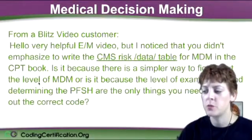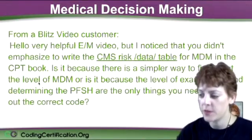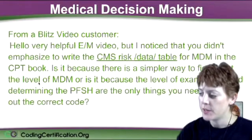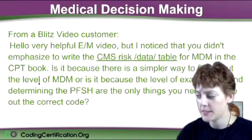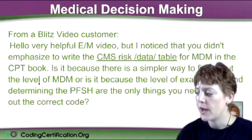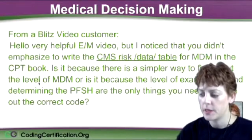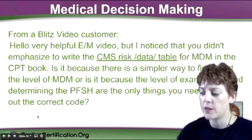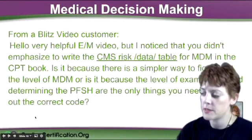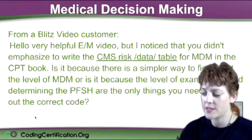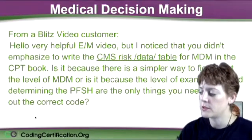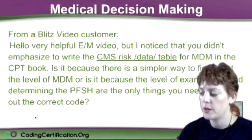Medical decision making. This is from one of our Blitz Video customers. A very helpful EM video, but I noticed that you didn't emphasize writing the CMS risk data table for MDM in the CPT book. Is it because there's a simpler way to figure out the level of MDM, or is it because the level of examination and determining the PFSH are the only things you need to figure out the correct code?